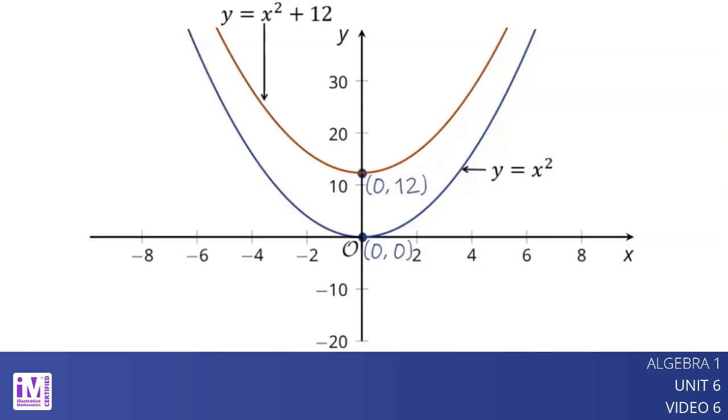Replacing x squared with the quantity x plus 3 squared shifts the graph 3 units to the left. And the vertex is now at negative 3 comma 0.